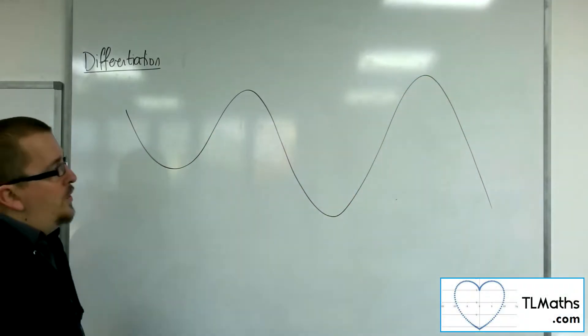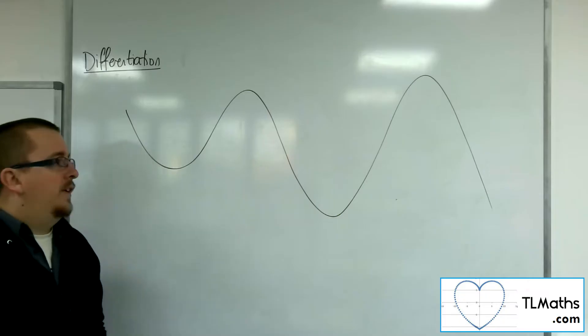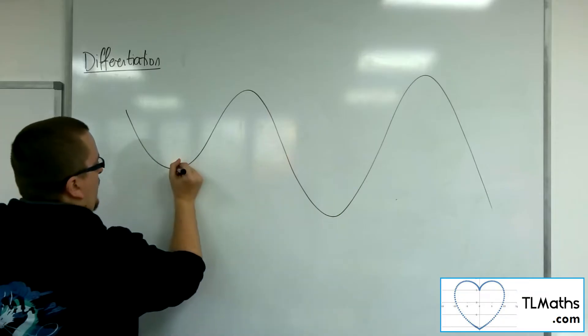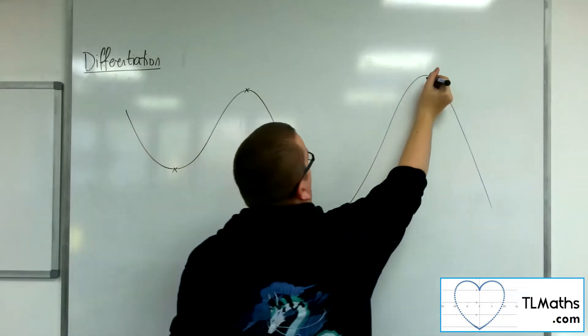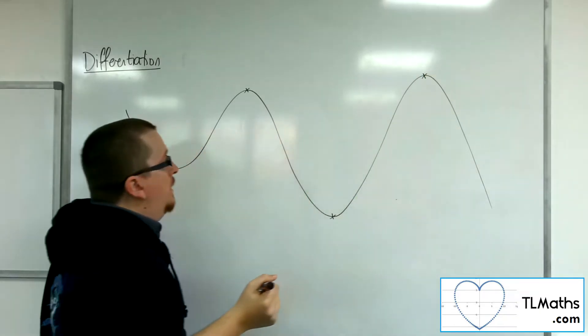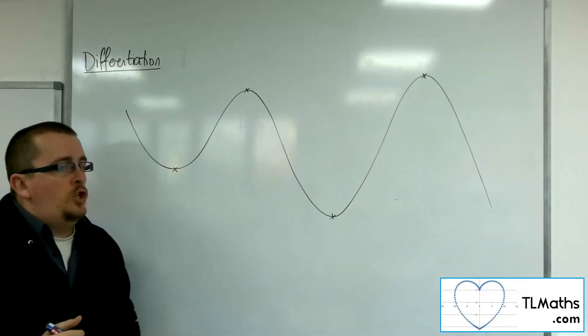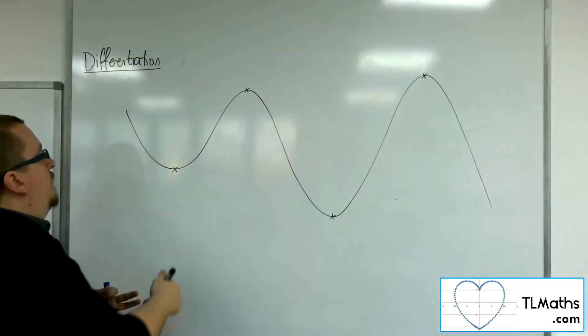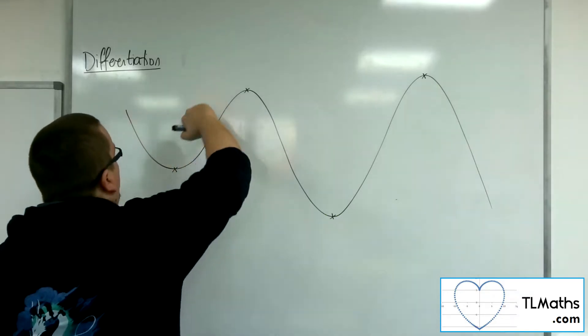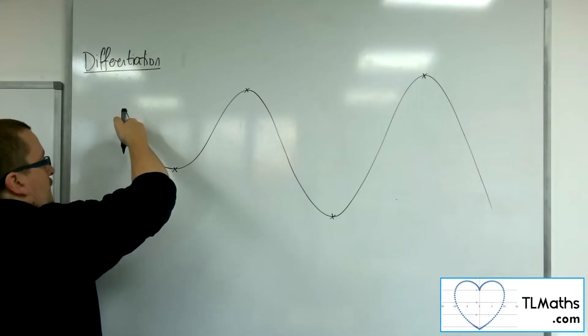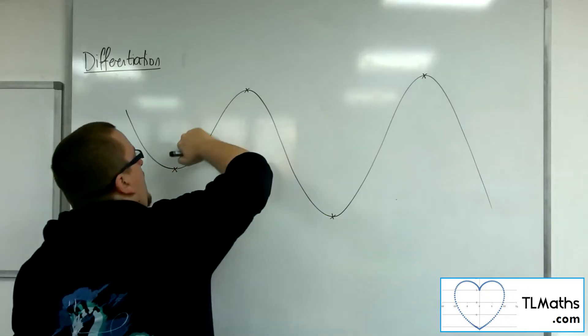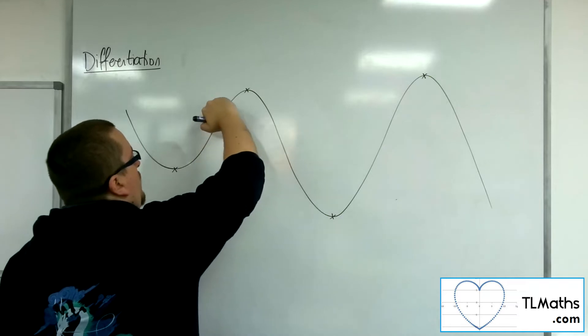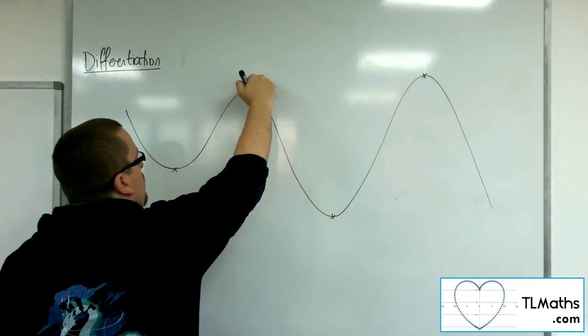So what you've got are regions of this curve where we have these points here that we know are referred to as stationary points. But we also have these regions where the curve is going like that, so we are effectively going, if you imagine, going in an anti-clockwise direction, and then we're going to hit a point where we start going in a clockwise direction.